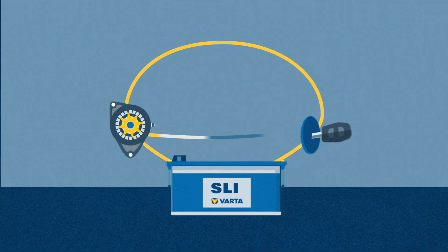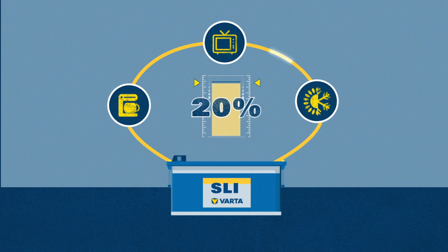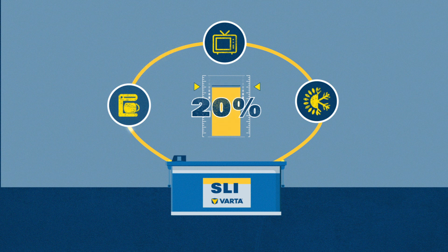For conventional starter batteries, VARTA recommends that discharge should not exceed 20% of the specified label capacity in order to achieve the maximum cycle life.